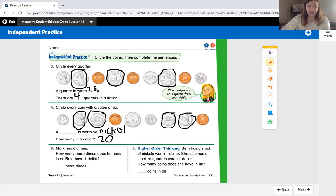Number five says Mark has six dimes. How many more dimes does he need in order to have one dollar? I know that six dimes is equal to 60 cents. It's just like having six tens. So 60 is what I have, and I need to get to 100. I'm going to put 60 in my brain and say 60, 70, 80, 90, 100. So that was four more dimes that I need in order to get to 100.